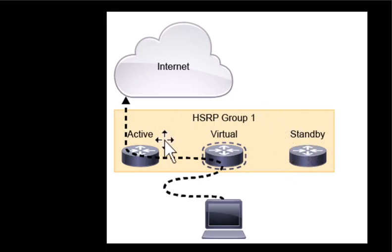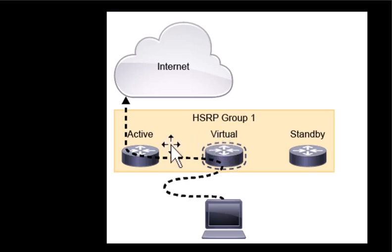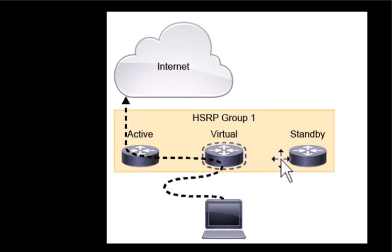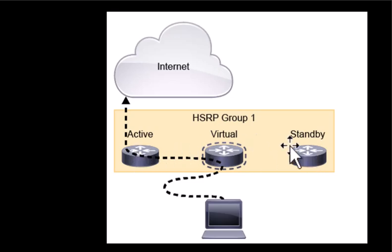HSRP group defines a group of routers — in this case one is active, one is standby — and you can have more than two routers in the HSRP group, in which case the others will be in listening mode. The virtual IP and MAC address will be shared between the active and standby routers, and the HSRP active router will respond to default gateway ARP requests and forward all traffic.